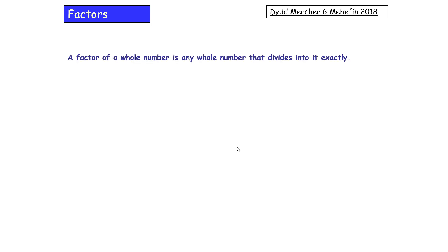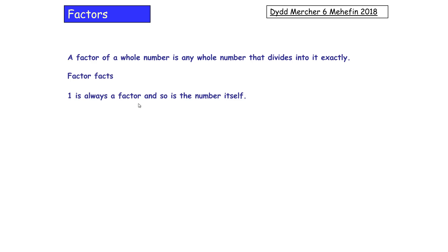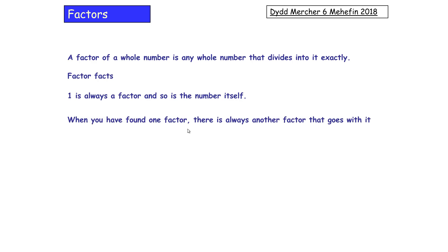Let's look at some facts about factors. A factor is a whole number that goes into another number exactly — no remainders. One is always a factor, and so is the number itself. For example, with 24, one goes into it one times, giving 24. And factors always come in pairs, which is why I use the factor spider.